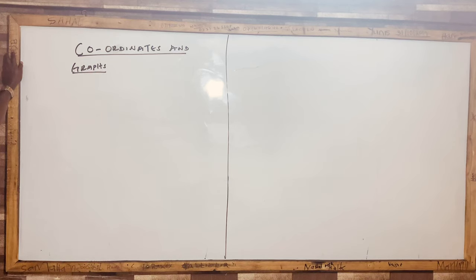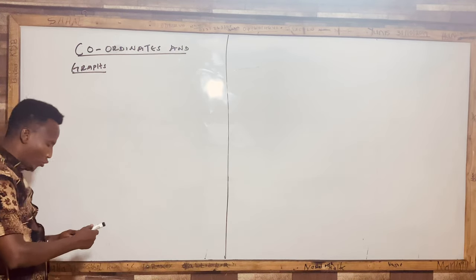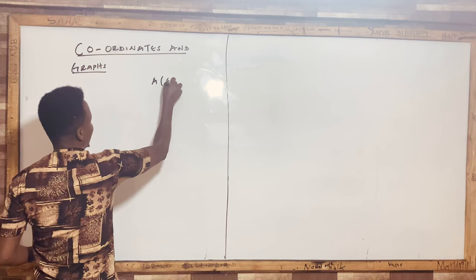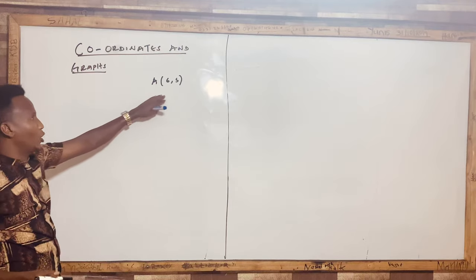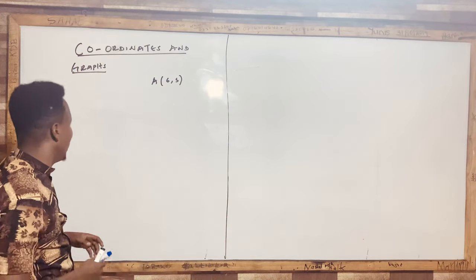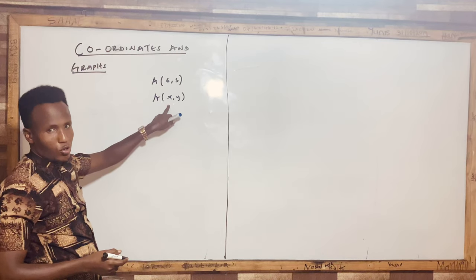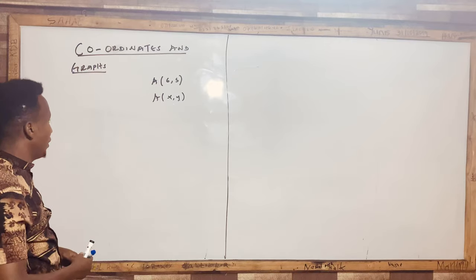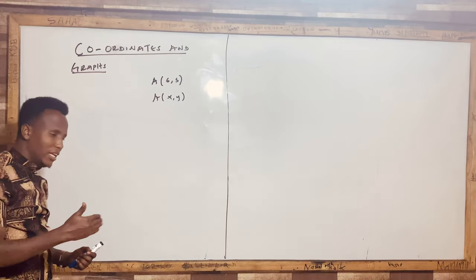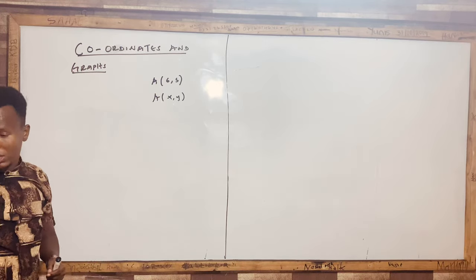This chapter is very fundamental — it covers the core concept of all graphs in high school. When we talk about coordinates and graphs, what do you mean by the word coordinate? If you have a point like (6, 5), that's what we call a point in mathematics. It has an x-coordinate and a y-coordinate. The format is x-comma-y, where the first value is x and the second is y.